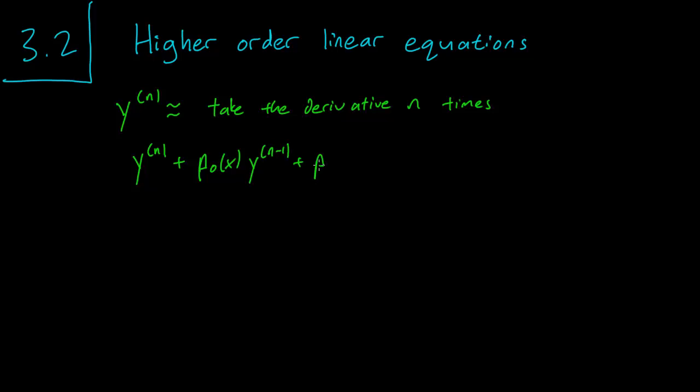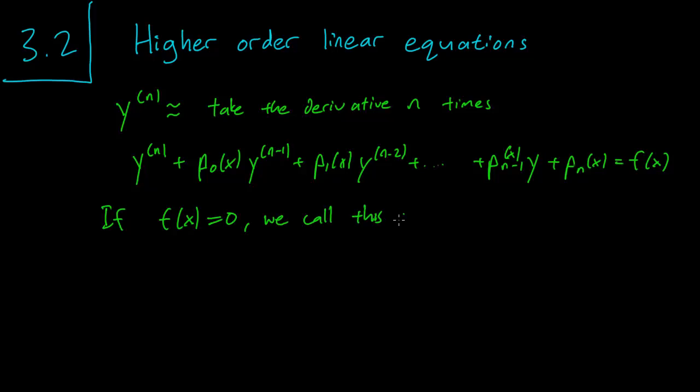Y^(n) plus p0(x) y^(n-1) plus p1(x) y^(n-2) and so on until you get p_(n-1) times y plus p_n of course equals f(x). This is an nth order linear equation. Again, we want to have all the y's and derivatives of y's by themselves. If f(x) equals 0, we call this a homogeneous equation.